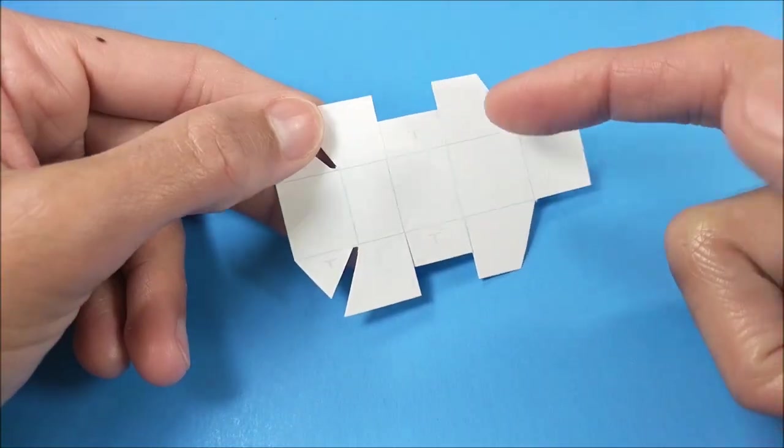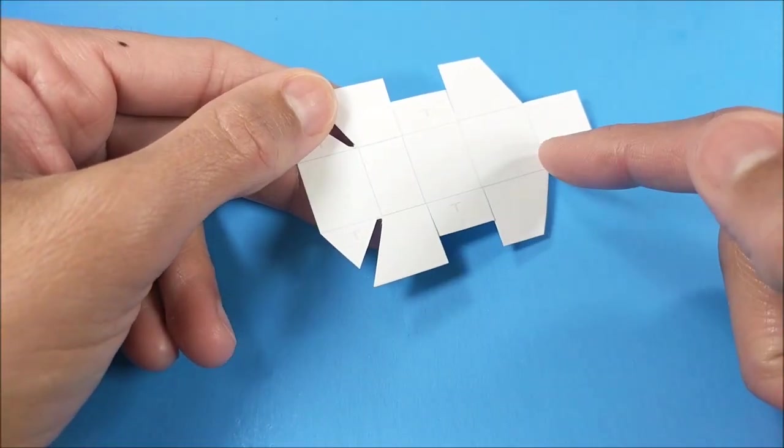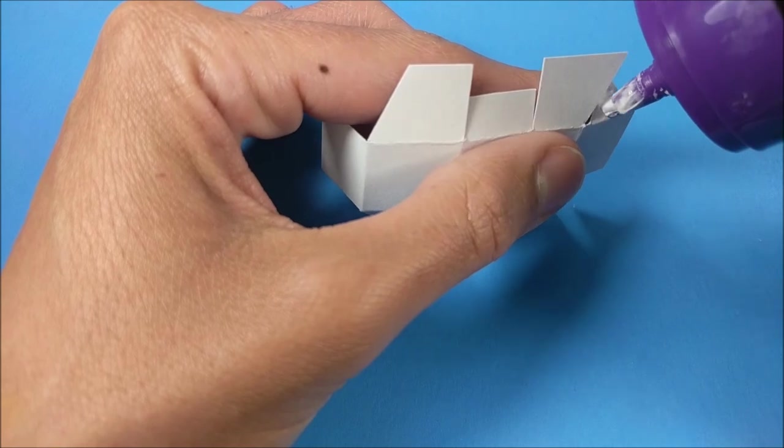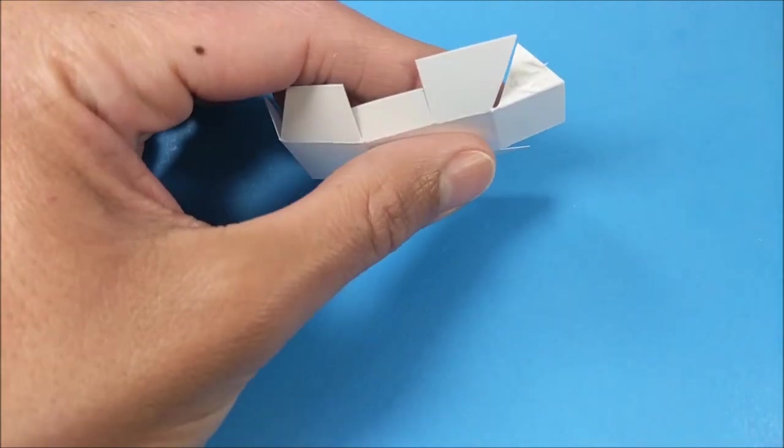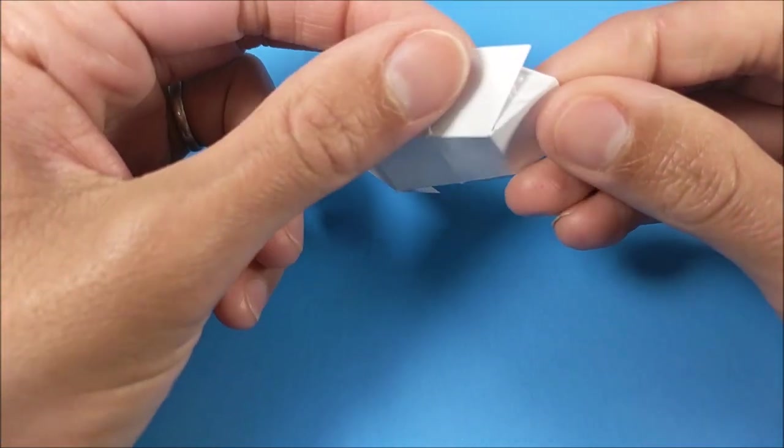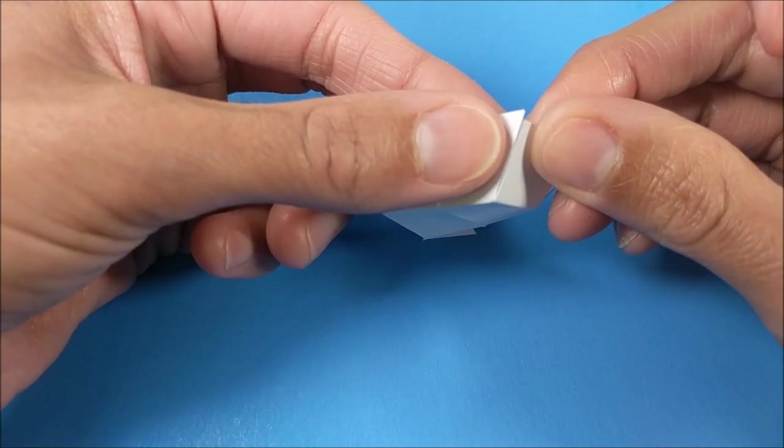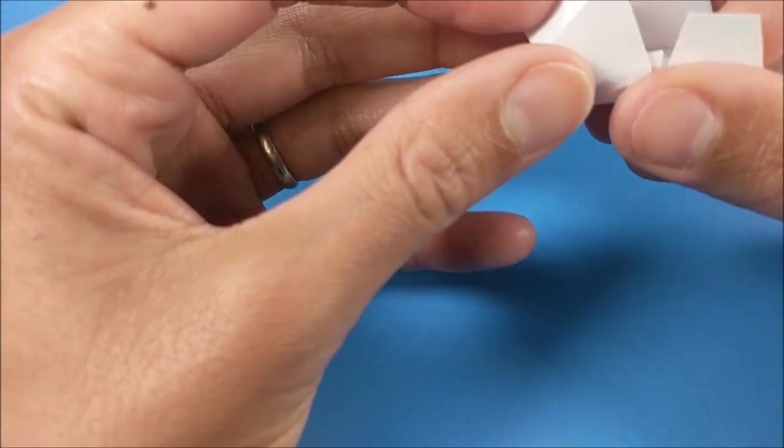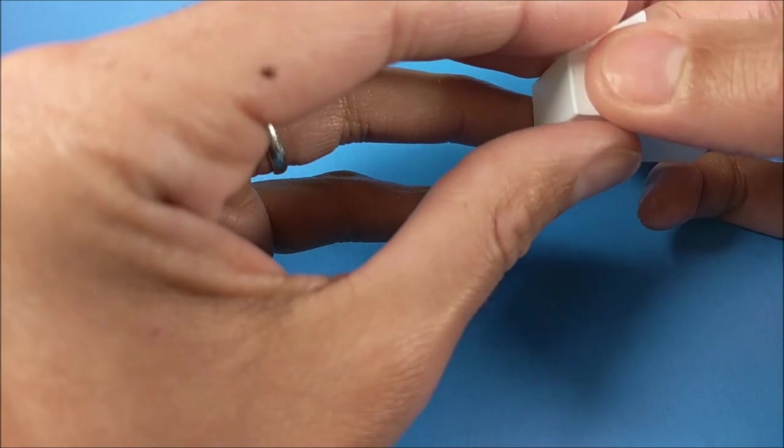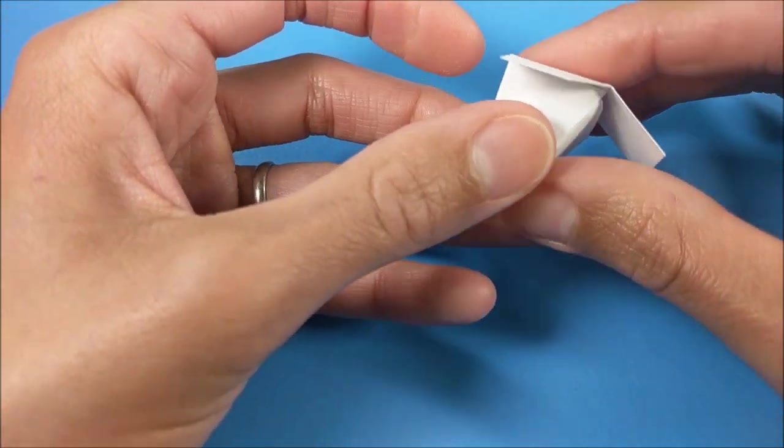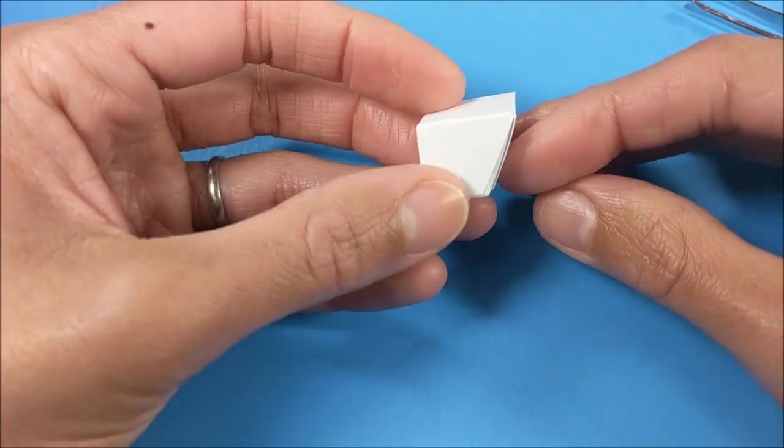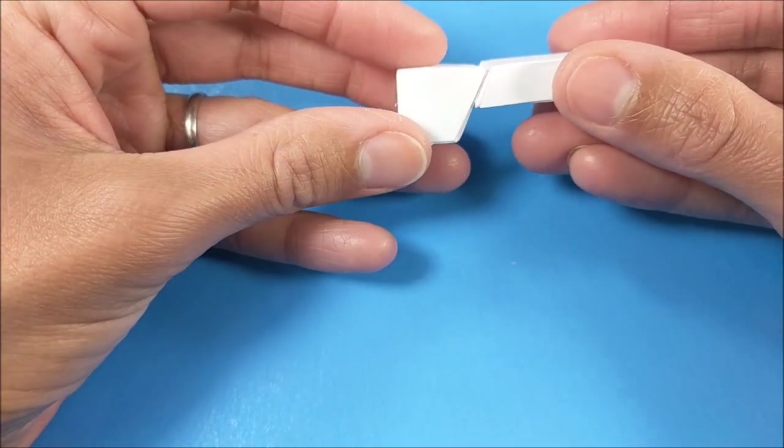And for the next piece, again just scoring on each line, folding over, and then gluing all of my tabs. So again, just the front two, two middle tabs, and the top three flaps. Then I glue these two together.